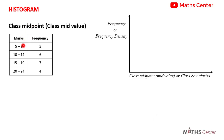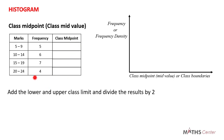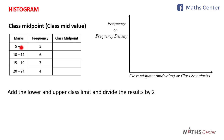To find the class midpoint for each interval, we add a column for class midpoint or class mid values. You get the class midpoint for a particular interval by adding the lower and upper class limit for that interval and dividing the result by two.